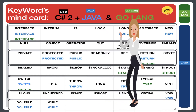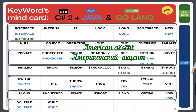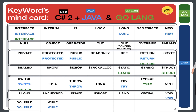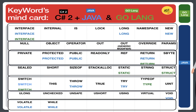Hi guys. Let's get started to compare and repeat three computer languages — second table from the letter I to the letter W — C#, Java, and Go language. Please listen to my American accent. I will speak slowly. Interface. Internal. Is. Lock. Long. Namespace. New. Null. Object. Operator. Out. Out — generic modifier. Override. Params. Private. Protected. Public. Readonly. Ref. Return. Sbyte. Sealed. Short. Sizeof. Stackalloc. Static. String. Struct. Switch. This. Throw. True. Try. Typeof. Uint. Ulong. Unchecked. Unsafe. Ushort. Using. Virtual. Void. Volatile. While. Guys. Well done.